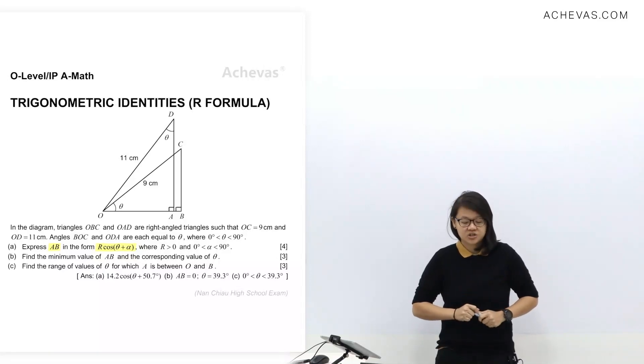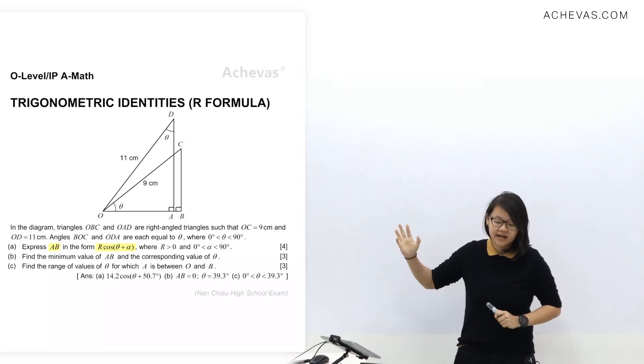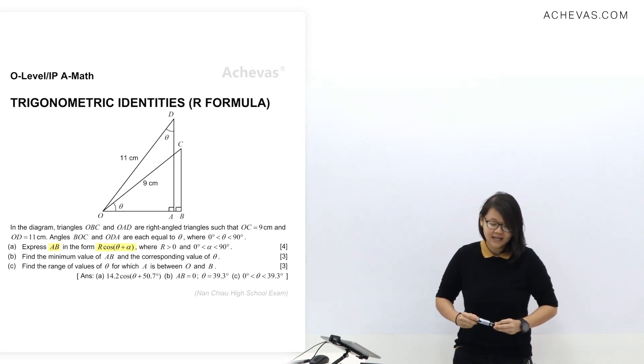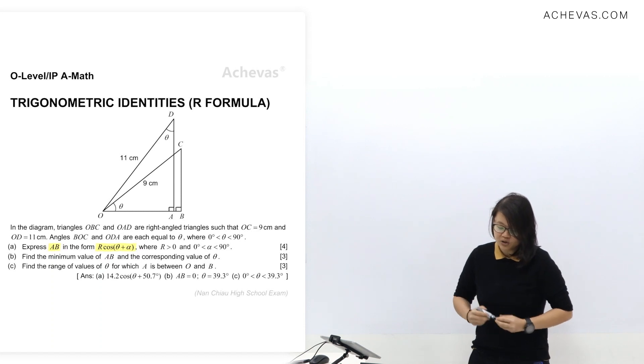Let's take a look at an R formula question here from Nan Chao Hai. In the diagram, triangles OBC and OAD are right angle triangles such that OC equals 9 cm and OD equals 11 cm. Angles BOC and ODA are each equal to theta, where theta is between 0 degrees to 90 degrees. Part A: Express AB in the form R cos theta plus alpha, where R is more than 0 and alpha is between 0 to 90 degrees.